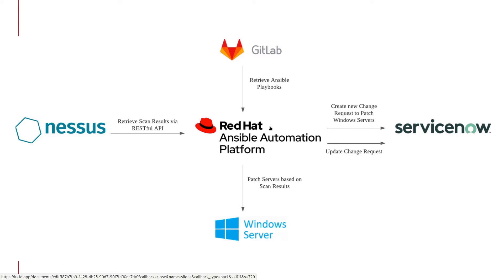We have a very simple single-level approval capability within Red Hat Ansible Tower. What will happen is that we will create a new change request in ServiceNow to patch the Windows server after getting that approval. Then the flow will continue to go and patch the servers using the results we pulled from Nessus. Upon completion of patching all the Windows servers, we are going to update the ticket in ServiceNow to say that everything has been done.